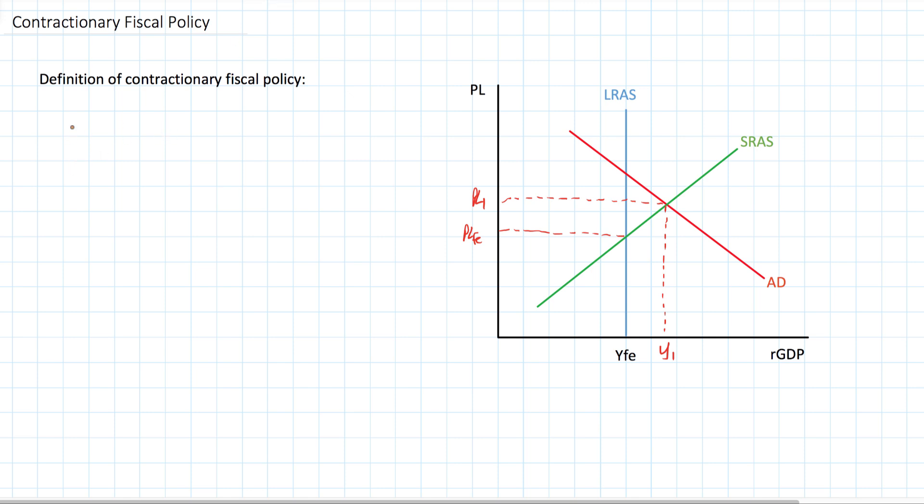So let's start by defining contractionary fiscal policy. A contractionary fiscal policy is when government policymakers reduce the level of government spending or increase the level of taxation with the aim of reducing aggregate demand, reducing national output, and bringing the inflation rate down to a lower and more stable level.